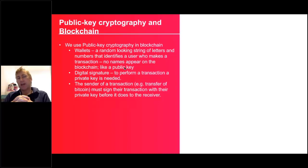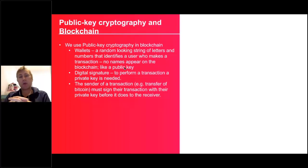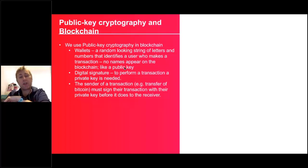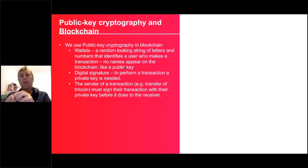In blockchain technology, in order to perform a transaction, we need to create what we call a wallet. A wallet allows us to keep and transfer bitcoins from one wallet to another user who also has a wallet. In technical terms, our wallets are random-looking strings of letters and numbers. One thing to be aware of is that the distributed ledger is public, so everybody can see all of the transactions in the blockchain.